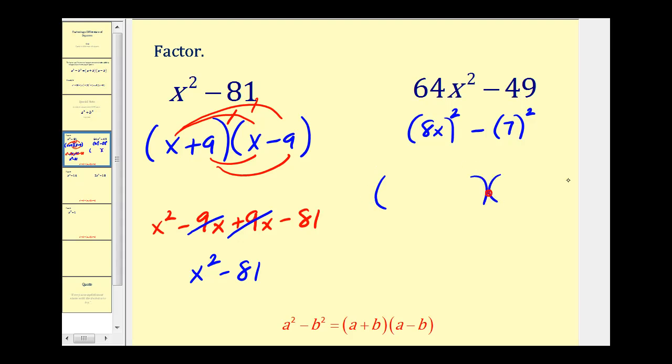What that tells us is, one factor will be 8x plus 7, the other factor will be 8x minus 7. And now this difference of squares is factored.